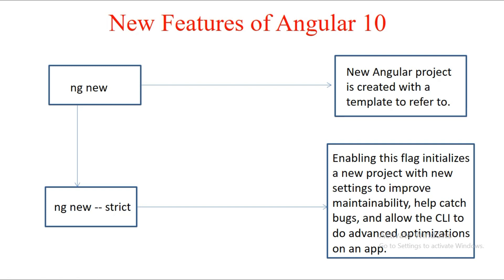Remember whenever we create a project we use `ng new`. With Angular 10 there is a new flag: `--strict`. Enabling this flag initializes your new project with settings to improve maintainability, helps catch bugs faster, and allows the CLI to do advanced optimizations on your application. The template is still created but with more enhancements — so `ng new --strict` gives you a more optimized app.